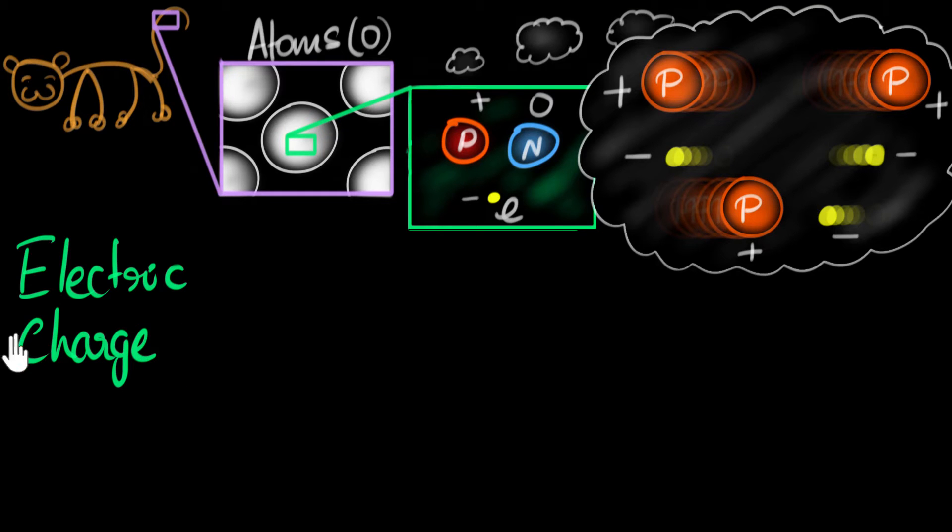In a previous video, we discussed what electric charge is. Basically, it's a property that protons and electrons possess, because of which they can attract and repel other protons and electrons.